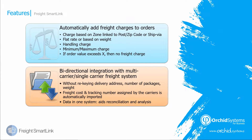Now we're going to see how to configure the bi-directional integration with multi-carrier or single-carrier freight systems. We'll see how, without re-keying the delivery address, number of packages, or weight, information can be transferred between Sage 300 and the freight carrier system. We will also see how to bring back the freight cost and tracking number assigned by the carriers onto the Sage 300 shipment review, and back onto the order or shipment if configured that way. Once you have the data all in one system, this aids reconciliation and analysis.